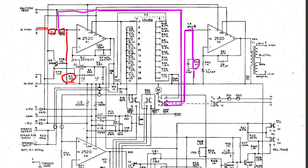I forgot to mention: I'm approximating this DC blocking cap as a short circuit. I've also assumed that this very tiny 47 picofarad capacitance only kicks in and is important at really high frequencies, so I've ignored that as well, treating it as an open circuit.